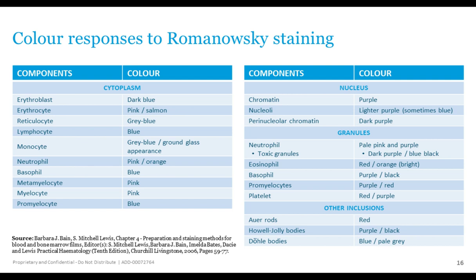A table shows the different components of the cell — chromatin, nucleus, perinuclear chromatin, and different granules — and how they appear with a good quality stain. Staining quality may vary from batch to batch. It's not just about white cells, nuclei, and chromatin — other cellular inclusions such as Auer rods, Howell-Jolly bodies, and Döhle bodies also have specific colors we need to recognize in order to classify them.